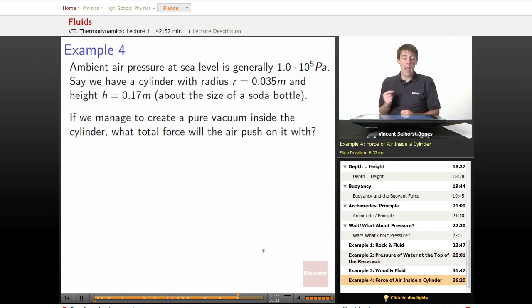Alright, example four. Ambient air pressure at sea level is generally about 1×10⁵ pascals. So if we have a cylinder with a radius r = 0.035 meters and a height h = 0.17 meters,